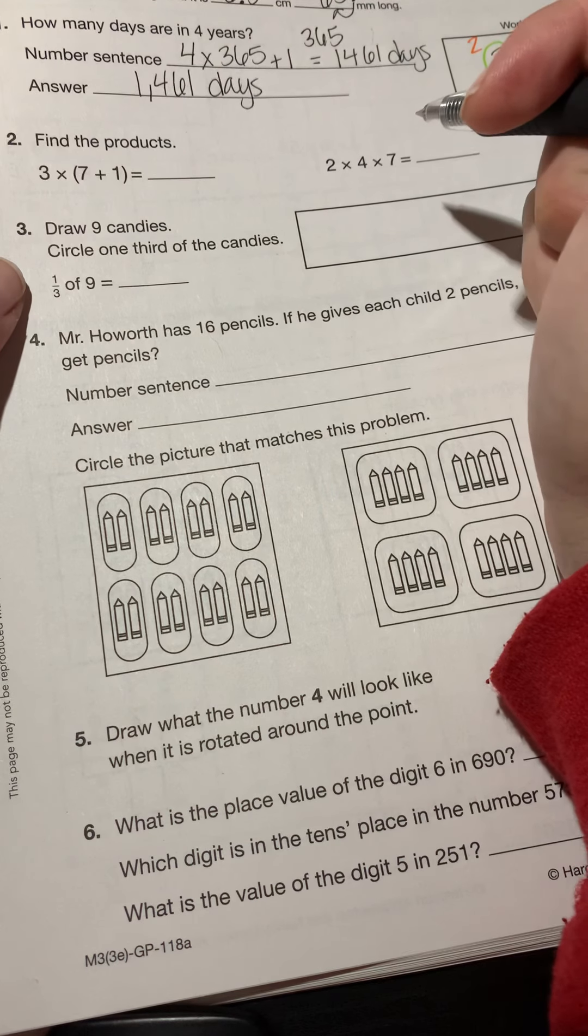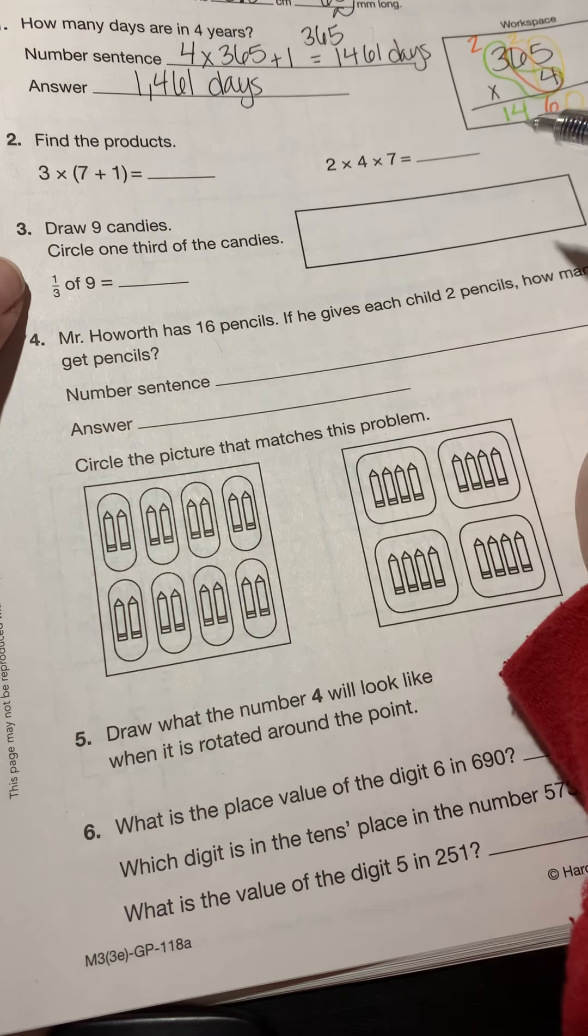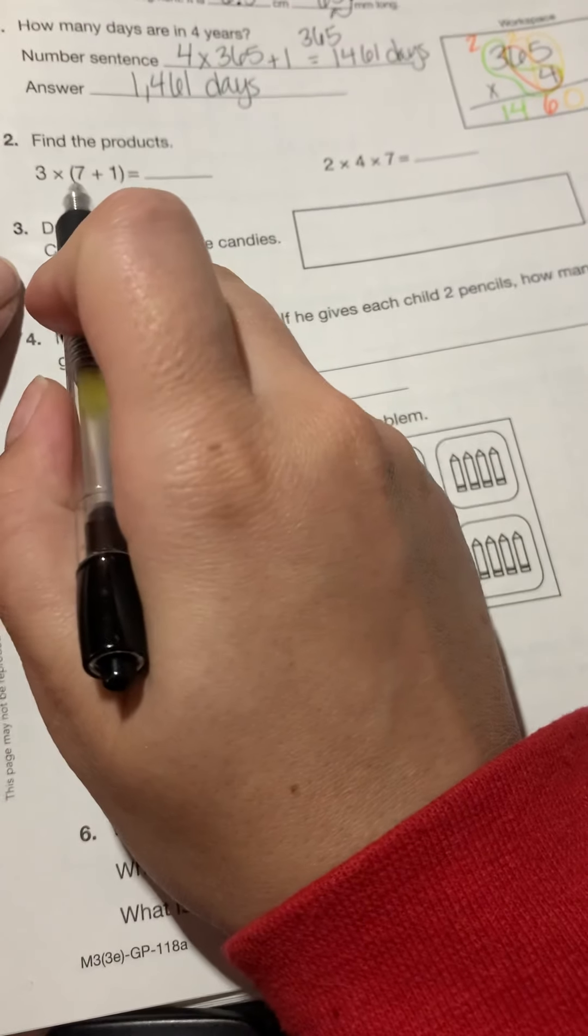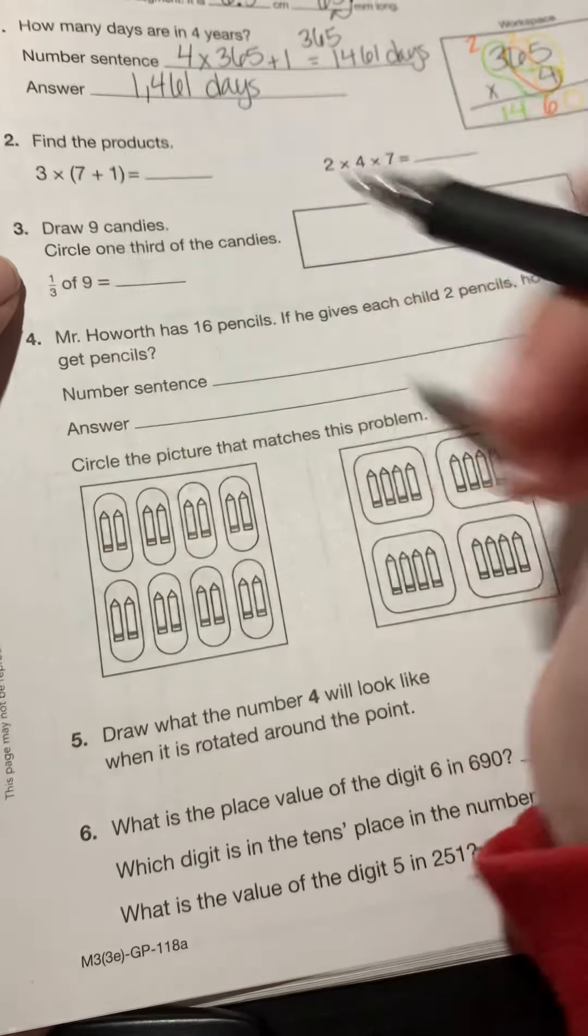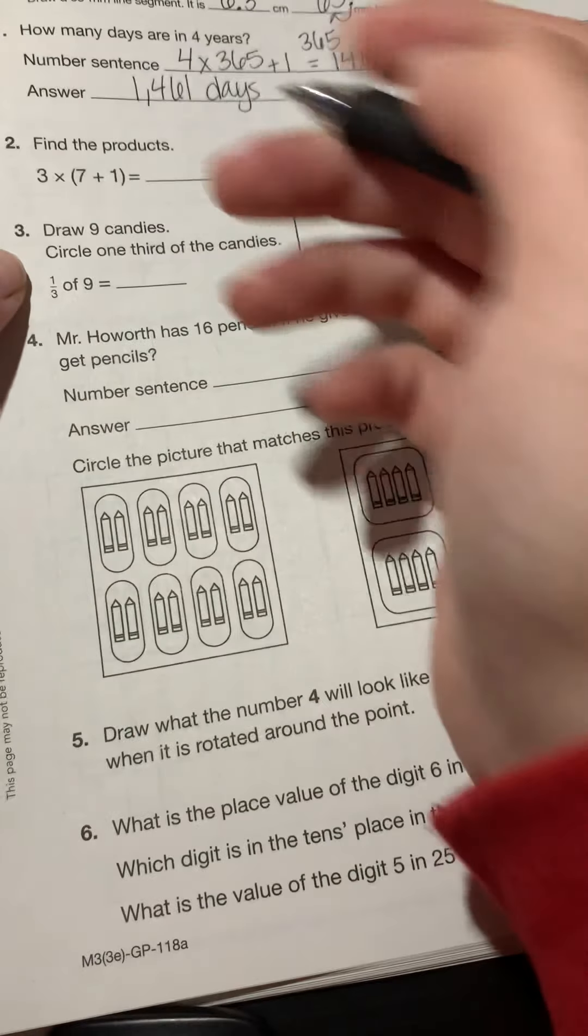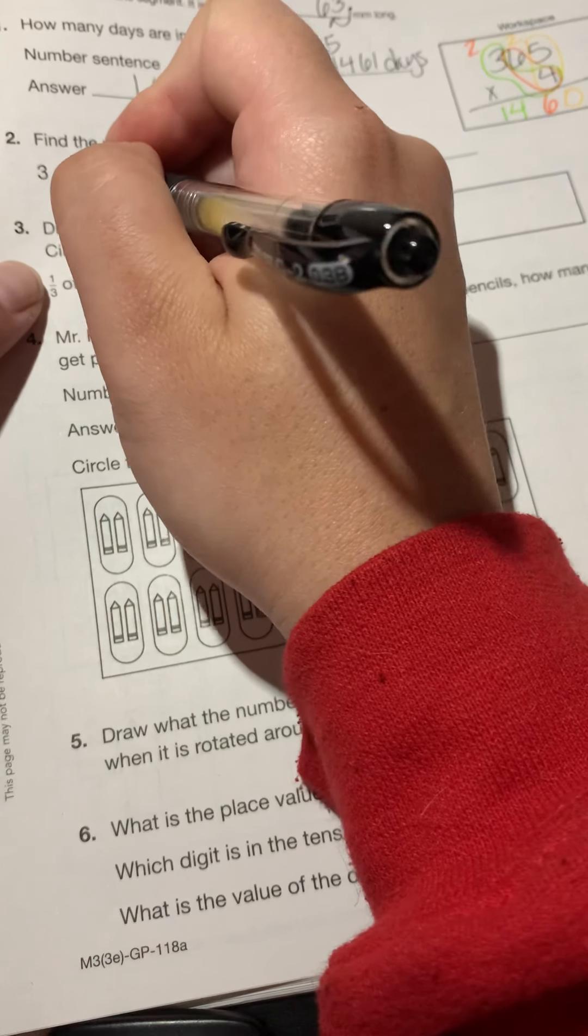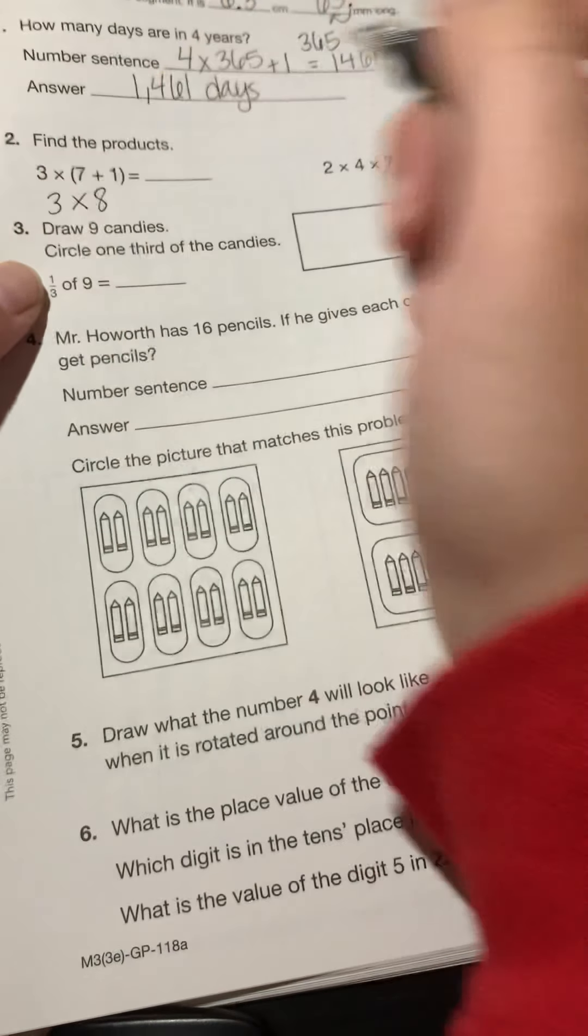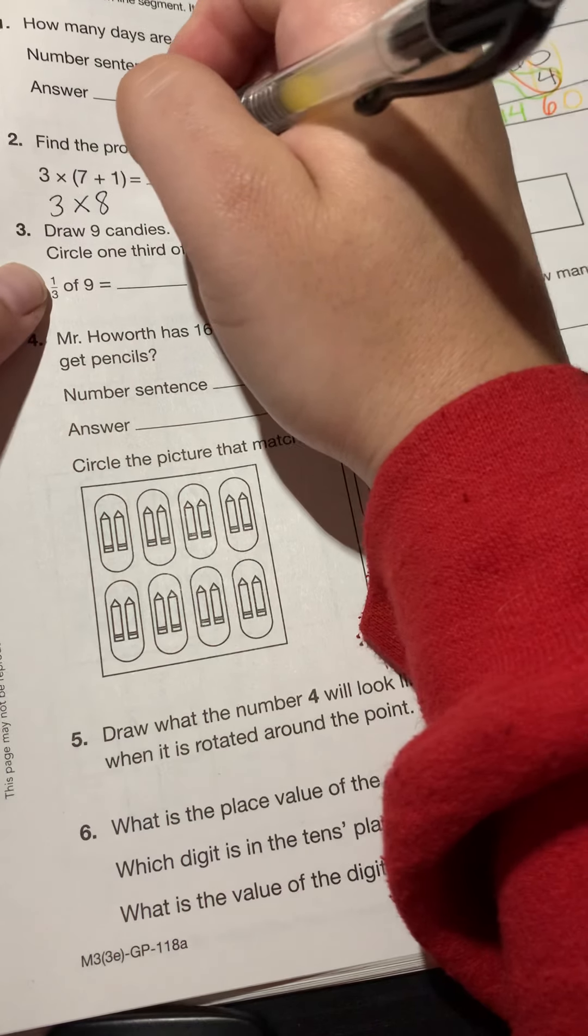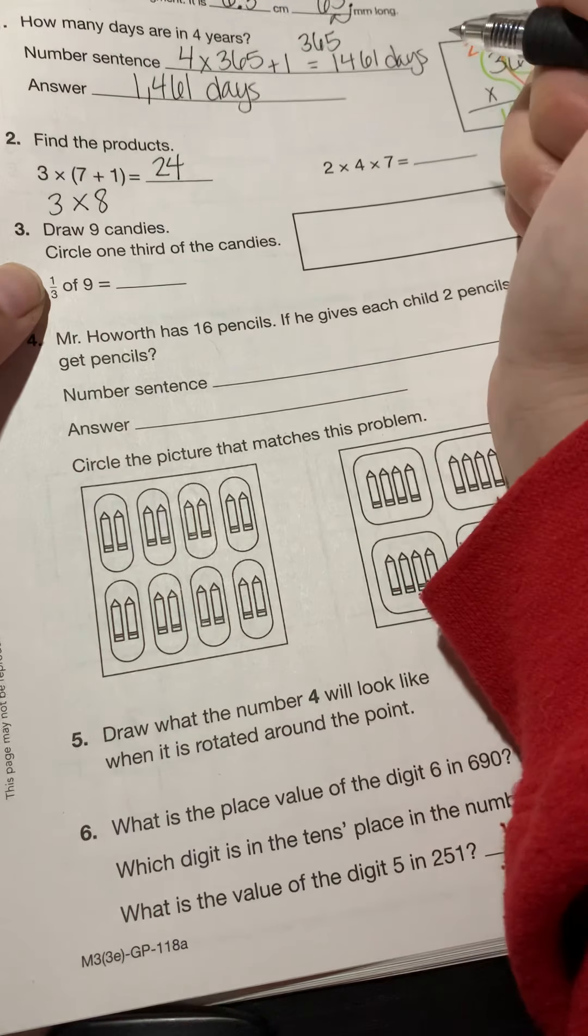All right, let's take a look. We're going to find the products now. So we're just finding the answers to the multiplication problems. So notice we have parentheses here and whatever's in parentheses we have to do first. So what's seven plus one? Eight. So now my problem is just three times eight, which equals 24. Perfect.